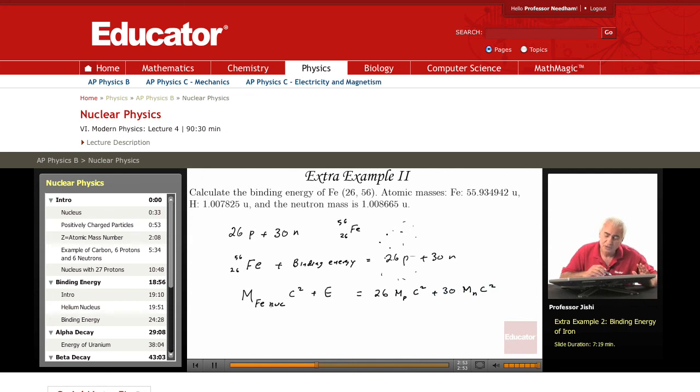Now this is the mass of the Fe nucleus. I'm given the atomic mass. To get the atomic mass, how do I obtain that? By adding the mass of 26 electrons. So I can add on both sides plus 26 Me C squared, and on this side add plus 26 Me C squared.